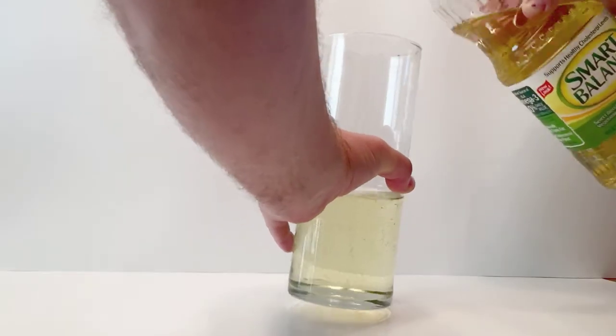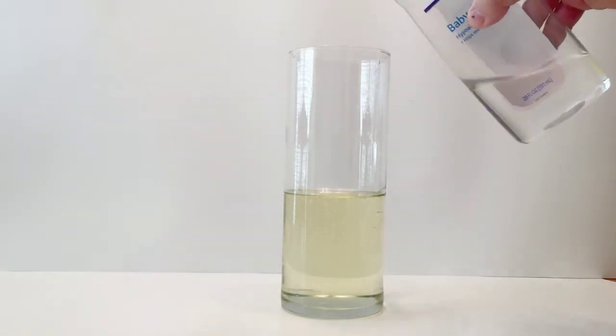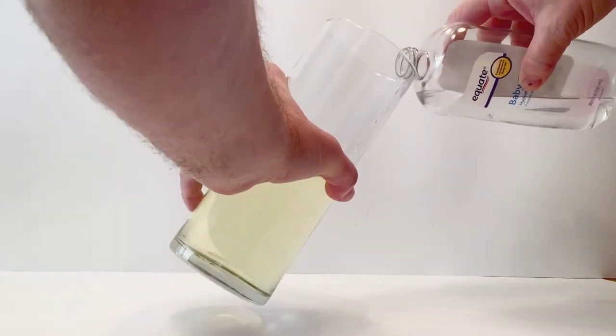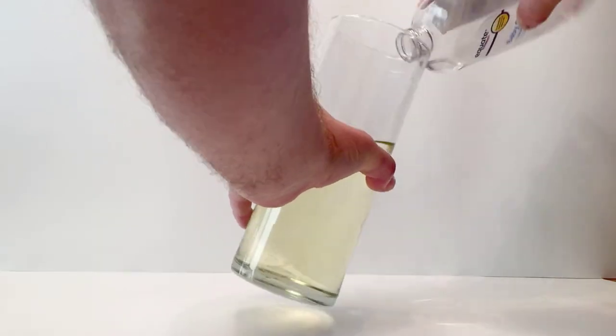Once you get it about halfway full, then you're going to take your baby oil and fill another inch or two on the top. I like to tilt the glass so it doesn't mix. I don't have to wait as long for it to separate as the baby oil is less dense than the veggie oil.